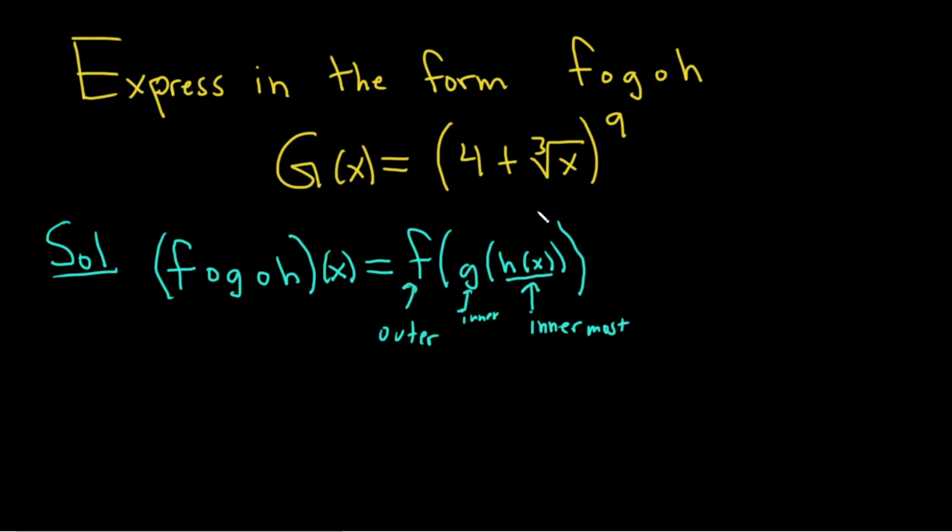So if you look here at this function big G, let's think about what the innermost function is. It looks like it could be the cube root of x. So I'm going to let h be the cube root of x. And the next one, it seems that it adds four to it. So your little g would be four plus x. And then the outer one would just be x to the ninth. So f of x equals x to the ninth.